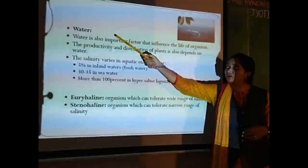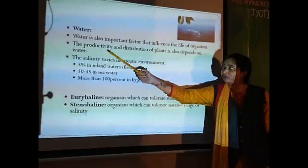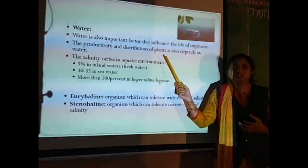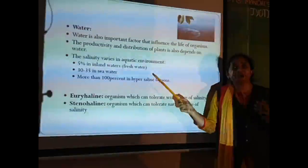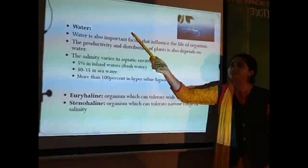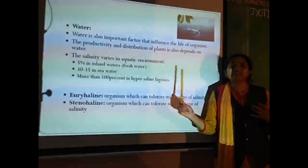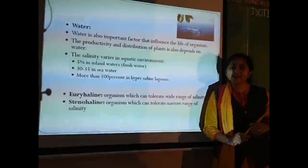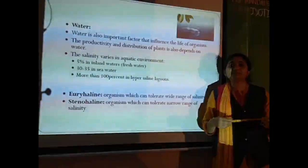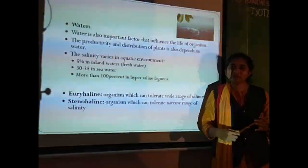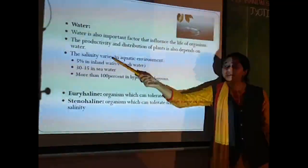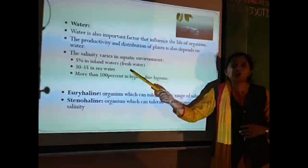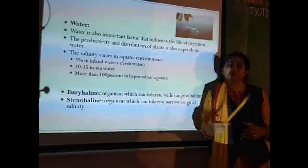Water affects not only the productivity and distribution of plants, but it also plays a major role in determining the type of animals present. Different types of water are present, and different types of plants and animals live in each. These waters differ because of their salinity — the amount of salt dissolved in the water.